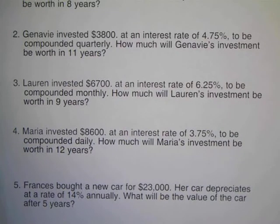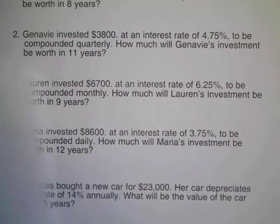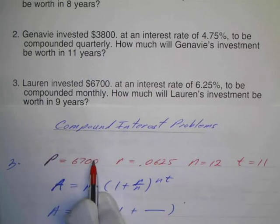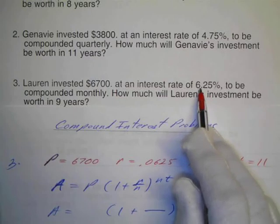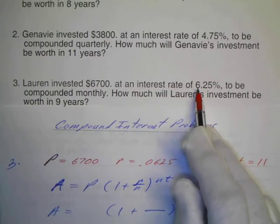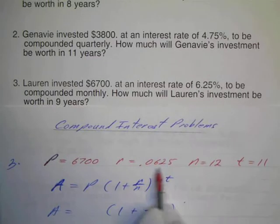Okay, here's some more compound interest problems and this is number three. It says Lauren invested $6,700 at an interest rate of 6.25% to be compounded monthly. So my principal will be $6,700. My rate will be 0.0625. Remember we moved the decimal point two places to the left to change from percentages to decimals.